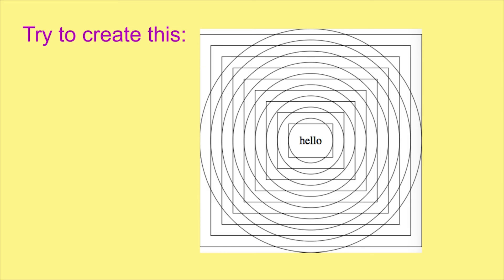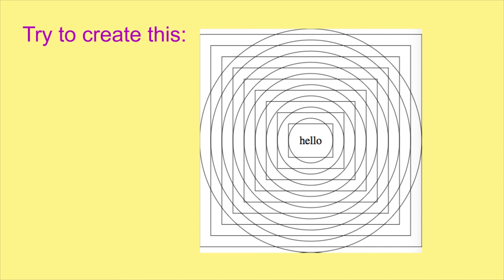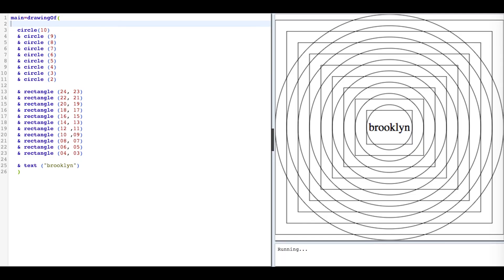Now try to create this design. A helpful hint is to use copy and paste if you know how. You can copy one circle or the rectangle and paste it over and over again, and then just change the parameters. Hopefully you got your own version of it. Here's how I wrote my code. Keep in mind that you can leave spaces wherever you want. I left spaces between the drawing of function, the circle function, and the text function so you can see those clearly. The only thing that's mandatory is that you have an indentation before each line because you're continuing the same function.